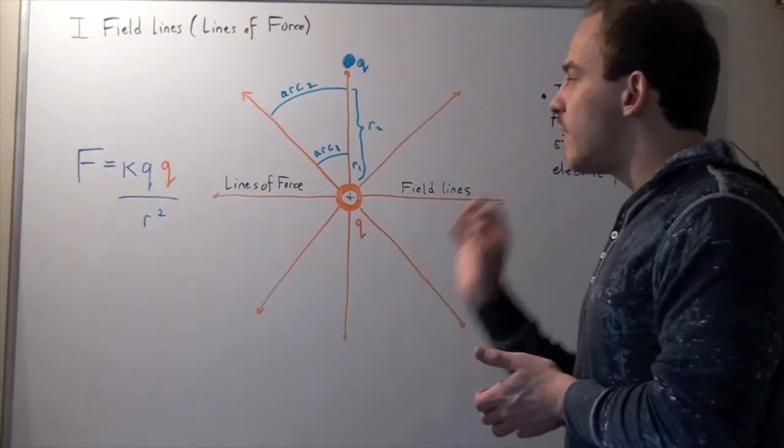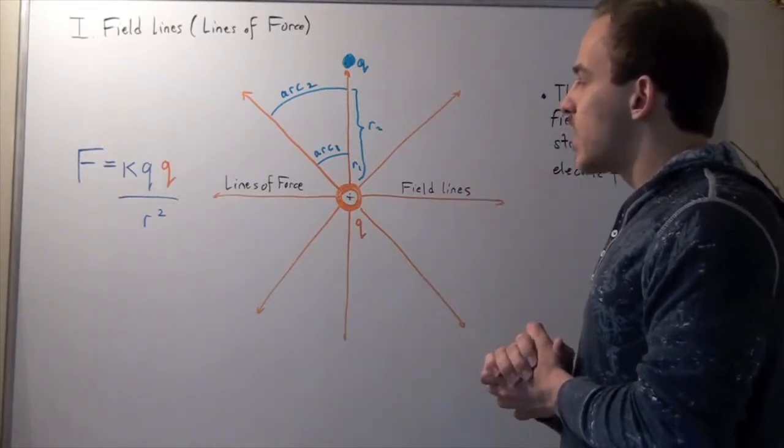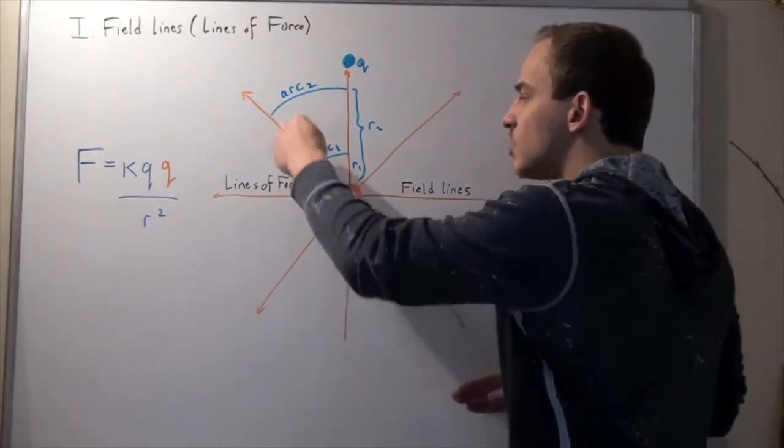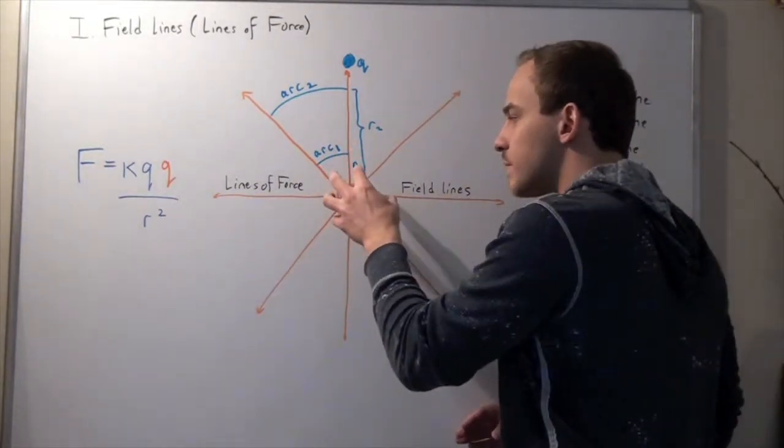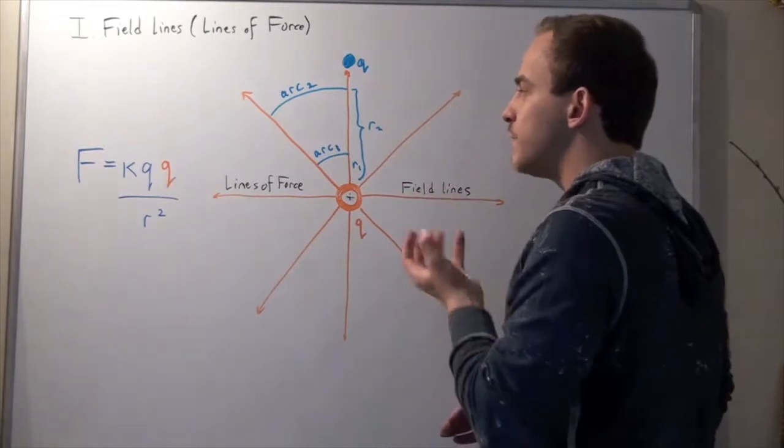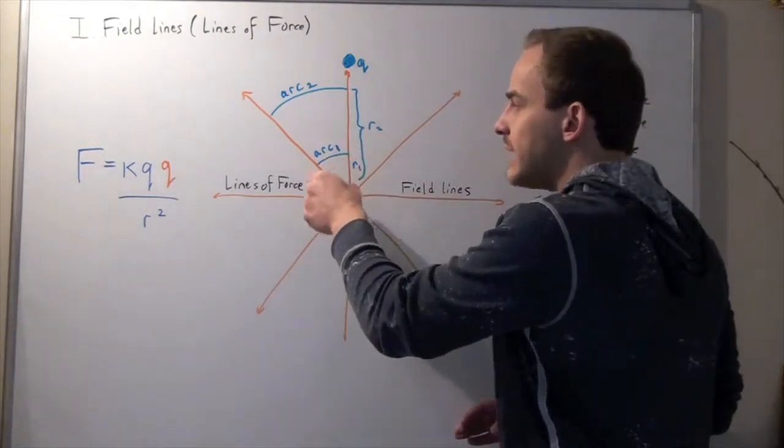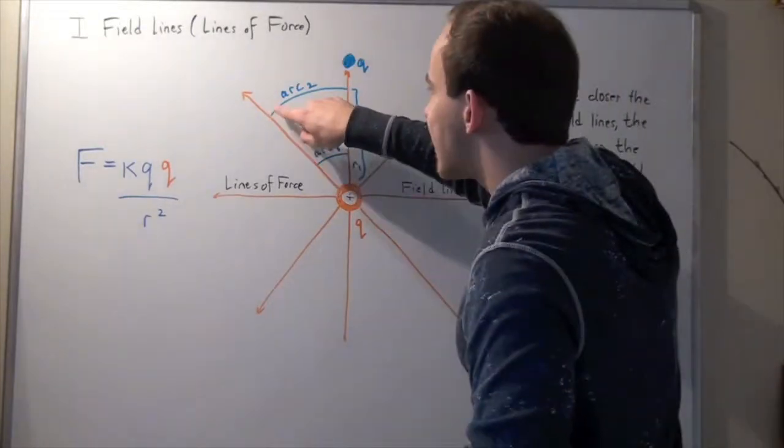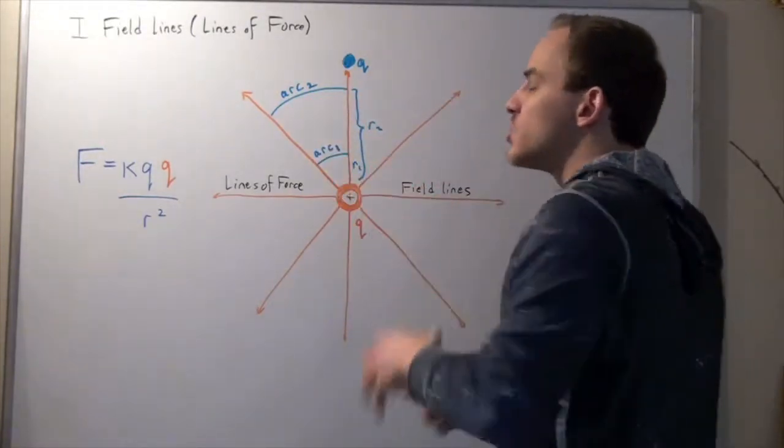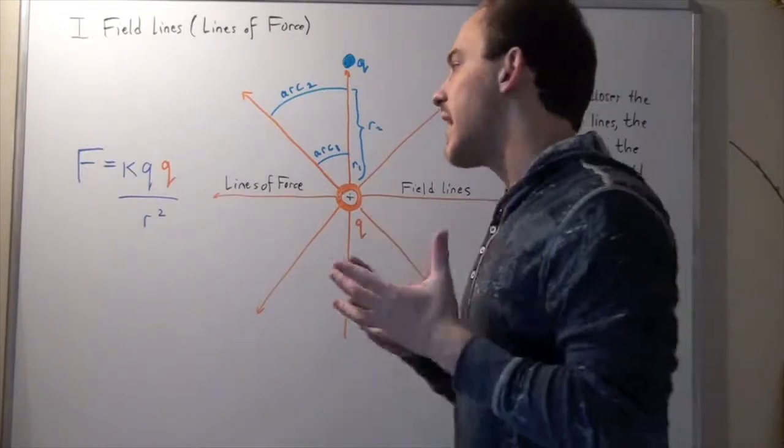Now I want to examine the following idea. Notice that as we get closer to our point charge in the middle, the charge creating our electric field, these arch lengths get smaller. In other words, this guy is much longer than this guy. So what is the significance of that?